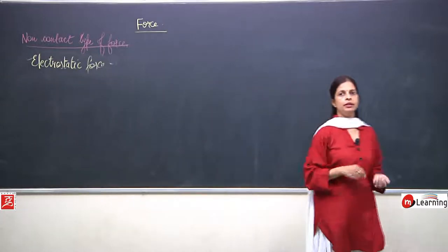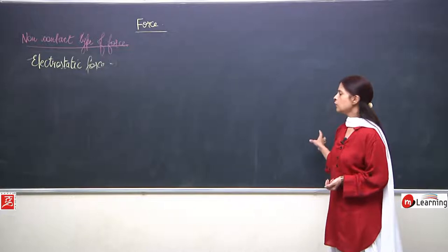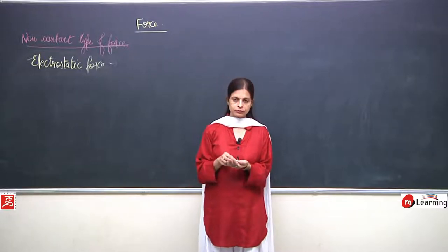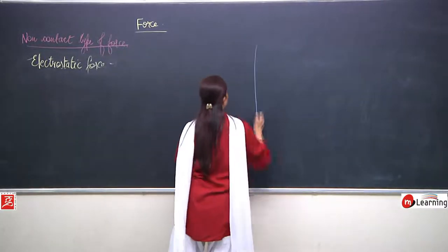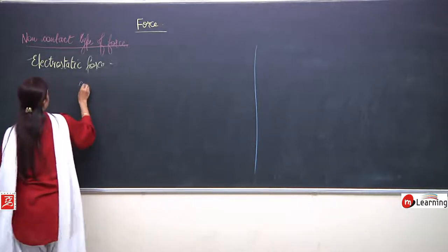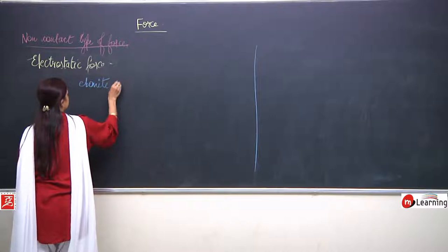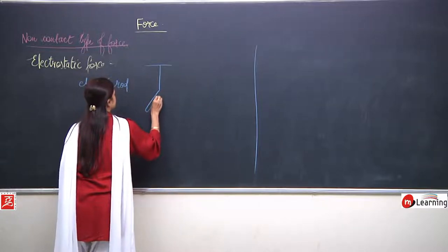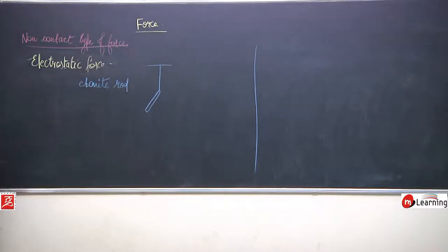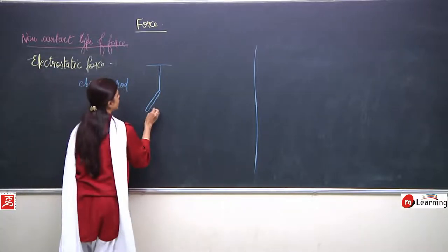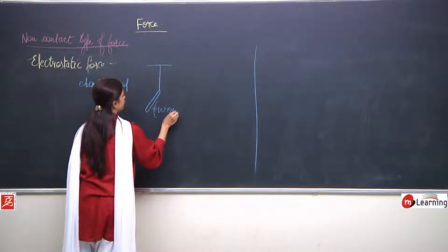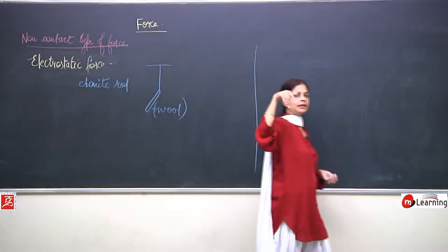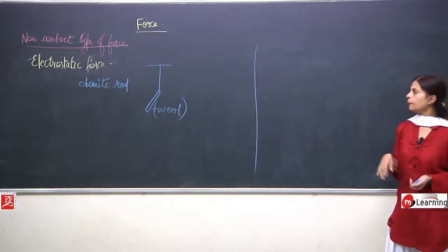We were talking about how charges are produced. This part is really very important — you need to understand it very properly. Now, to proceed with the next example, if I take an ebonite rod and hang it like this, and if I rub this ebonite rod with wool, it gets charged.